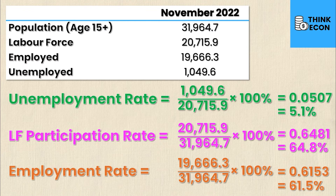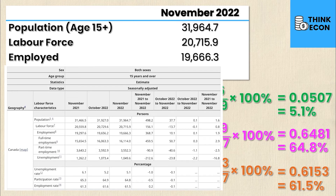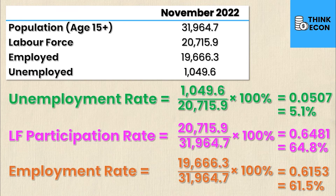Going back and checking the Labour Force Survey data, all three calculated rates perfectly match the rates determined by Statistics Canada. Remember that the denominator for the unemployment rate is not the same as the denominator for the employment rate — that's the biggest mistake students make — and therefore the unemployment rate and the employment rate do not sum to 100%, as you can clearly see.